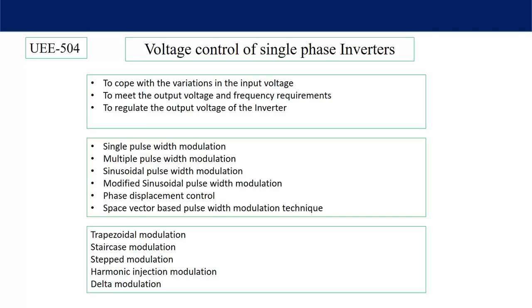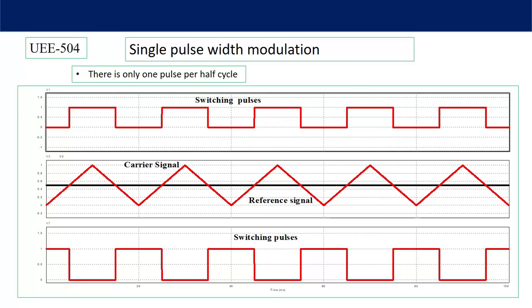Let us start with single pulse width modulation. First, let us see how the switching pulses are generated. There is a triangular signal, known as the carrier signal, and a smooth DC signal, known as the reference signal. The carrier signal is compared with the DC reference signal in a comparator. The positive terminal of the comparator is connected to the carrier signal and the negative terminal to the reference signal. Whenever the triangular signal is greater than the reference signal, you get a pulse.